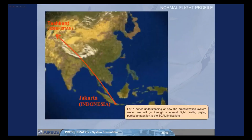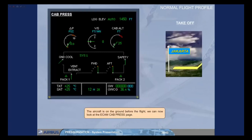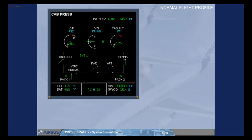For a better understanding of how the pressurization system works, we will go through a normal flight profile, paying particular attention to the ECAM indications. The aircraft is on the ground before the flight. On the ECAM cabin pressurization page, observe that the outflow valves are fully open, the differential pressure is zero, there is no vertical speed, and the cabin altitude is indicating the field elevation of the departure airfield.